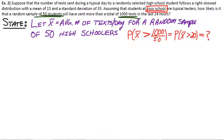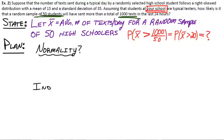So, in the state step, we just stated the exact problem we're trying to solve. And we defined, we said what x-bar was. It's the average number of texts per day from a random sample of 50 high schoolers. So, the state step is good. Let's go to the plan step then. And the plan step is where we've got to meet our conditions. And there's two conditions here. There's the normality condition and there's the independence condition.